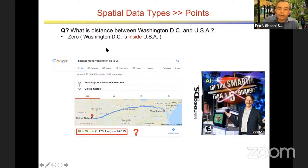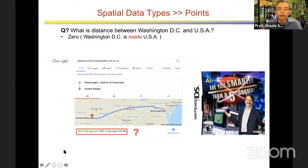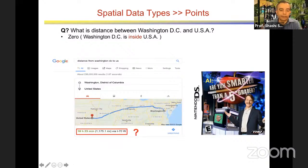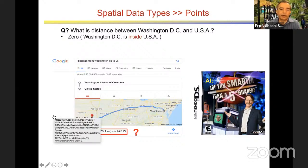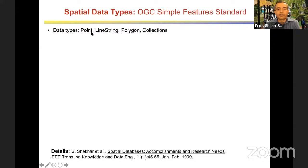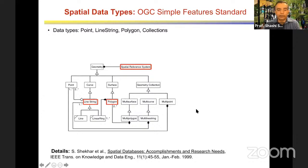Why is Google giving a non-zero answer? Most machine learning, data mining, and text processing software models points. So they model Washington DC as a point — the center of Washington DC — and model the United States as a point — the center of continental US somewhere in Kansas — and then compute distance. They do not do good modeling of extended objects like polygons. This is a blinder in most generic software, and it tells you why you should look at specialized spatial software.